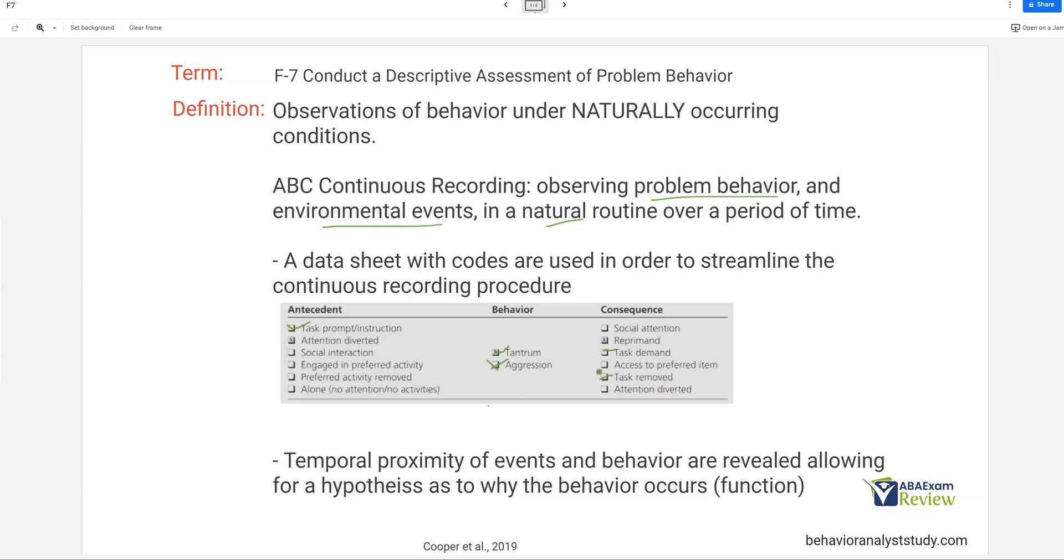For example, if you're observing and your client is given a task prompt, and then they engage in aggression, and as a consequence, you remove the task, there's one ABC data point. And as we build more and more data points, and as we gather more and more data points, a picture is going to start forming of this behavior, what happens before, and what happens right after.